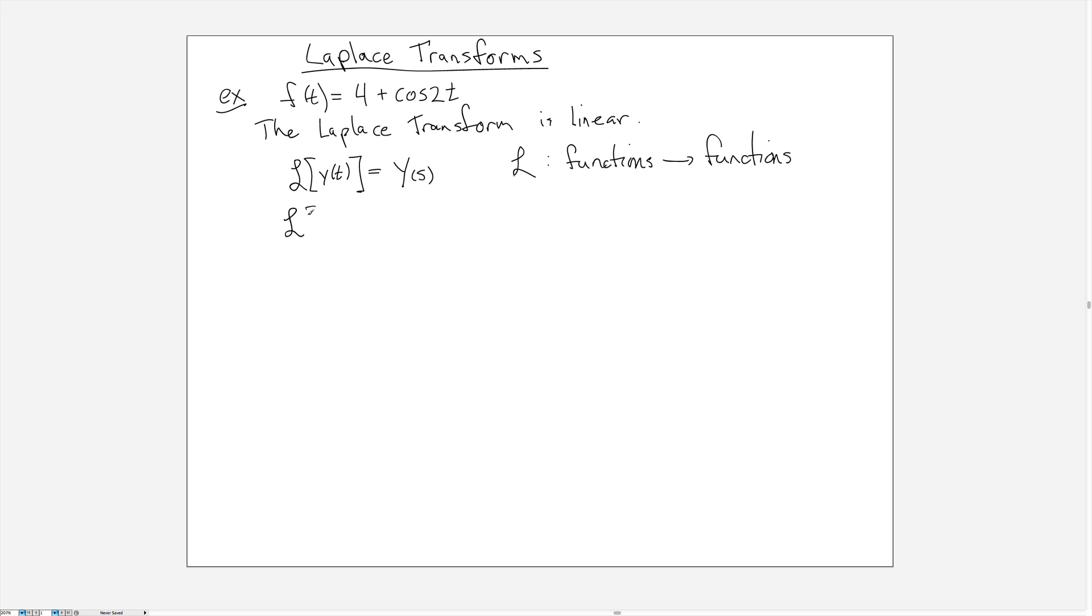So what that means is if you try to take the Laplace transform of y1(t) plus y2(t), what do you get? Well, we can write this out. This is the integral from zero to infinity of e to the minus st, y1(t) plus y2(t) dt.